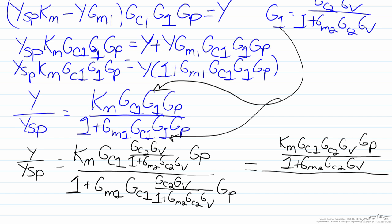1 times 1 will just be 1. Then Gm2 Gc2 Gv will just be 1 plus Gm2 Gc2 Gv and we will have our last term here which will be Gm1 Gc1 Gc2 Gv Gp.